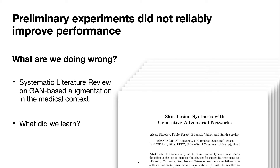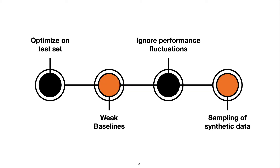When we started this research, we wanted to assess the impact of two years of GAN advancement for skin lesion analysis, complementing our work from 2018. Our preliminary experiments did not reliably improve performance, and because of this we started wondering what were we doing wrong. To try to find the answers, we performed a systematic literature review on GAN-based data augmentation focused on the medical context. Through this review we found some methodological problems we want to avoid, and I will go through some of them here.